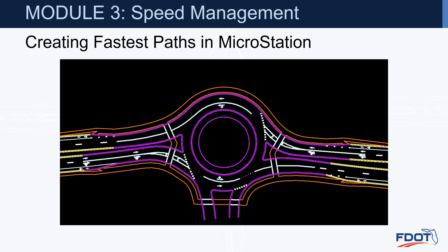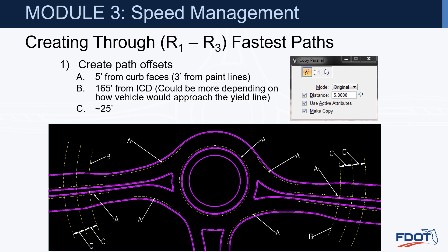Here's an example in MicroStation — these slides are in FDM 213. We're going to create the R1 through R3 fastest paths for the through movement. We place offsets of five feet from curb faces or three feet from paint lines, as shown at point A. We take the ICD — the edge of curb of the splitter island — and offset that 165 feet to get our B line, then offset another 25 feet to establish the other lines, doing that on both the entry and the exit.